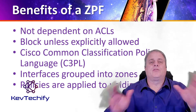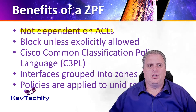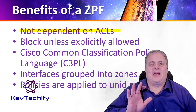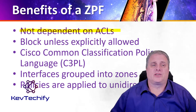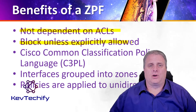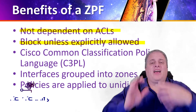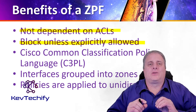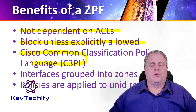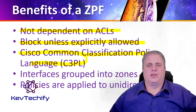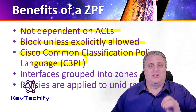There are several benefits of a zone-based policy firewall. First, it's not dependent on ACLs — you don't have to create access control lists for a zone-based policy firewall. The second benefit is the router security posture is to block everything unless you explicitly allow traffic to come through. The third one has to do with the Cisco Common Classification Policy Language, also known as C3PL.